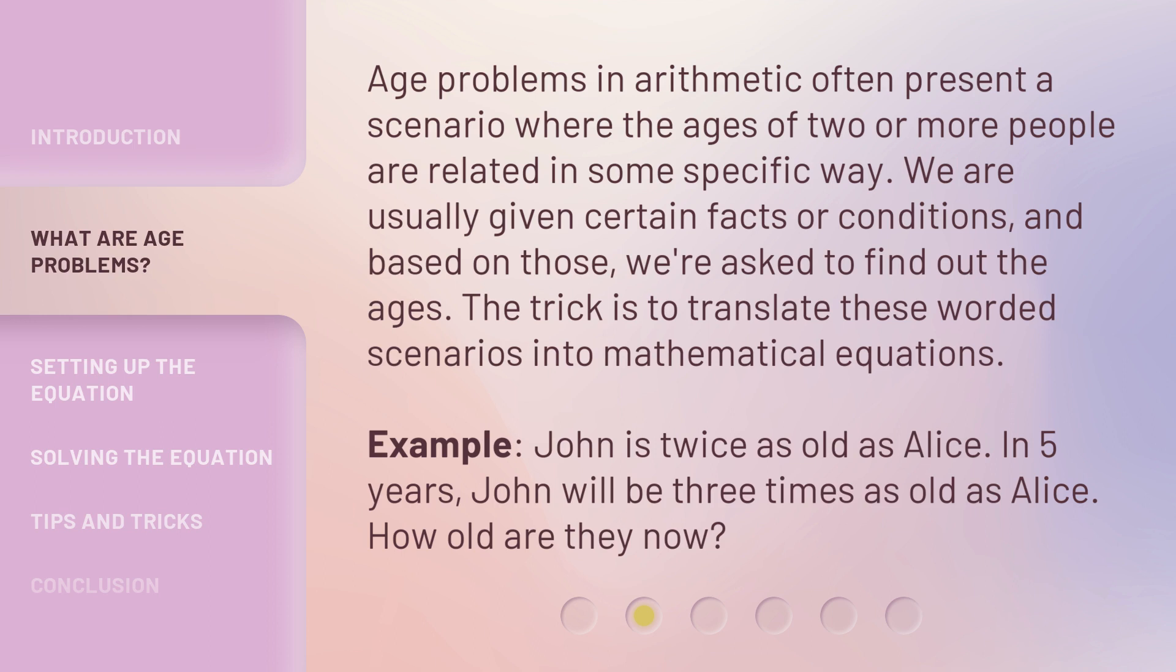Example: John is twice as old as Alice. In five years, John will be three times as old as Alice. How old are they now?